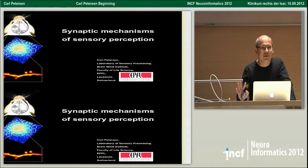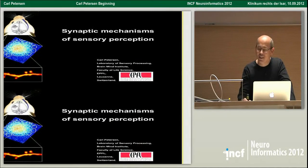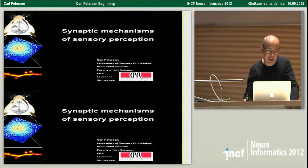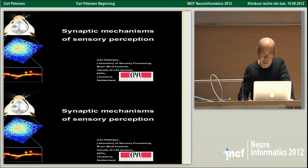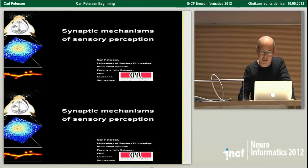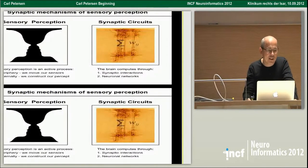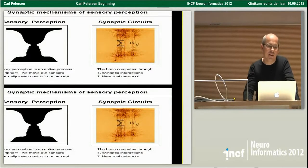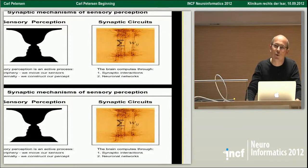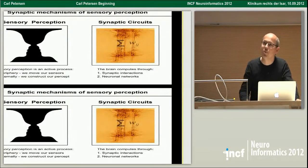I want to share a bit about my work that fits in with the talk you just heard, dealing with cell types. I want to start by talking about behavior, because in the end, that's what we'd like to get to. My lab is interested in trying to understand synaptic mechanisms of sensory perception — a causal and mechanistic understanding of how very simple forms of sensory perception arise.